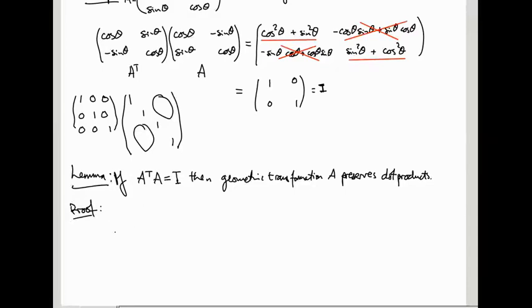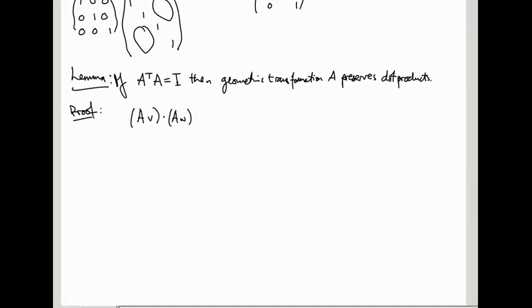Proof: what does this mean exactly? Well, if I take AV and AW and I dot them together, that should give me the same as just V dot W. So this is by definition AV transpose times AW. Now using the lemma from before, AV all transposed is V transpose A transpose. Remember if you're transposing a product, you transpose the two factors and stick them in the opposite order, and then times AW. Now looking at this, we've got an A transpose A in the middle, which is the identity. So this is V transpose times the identity times W. The identity doesn't do anything, we can just ignore it, it's like multiplying by one. This is V transpose W, and this is V dot W.